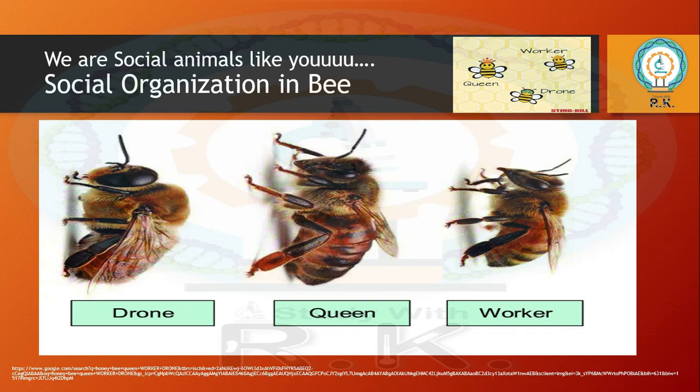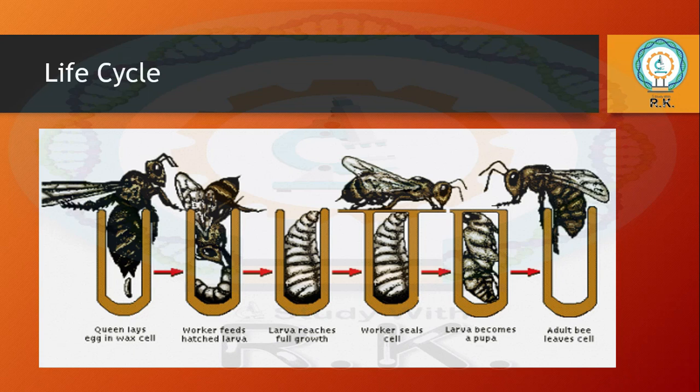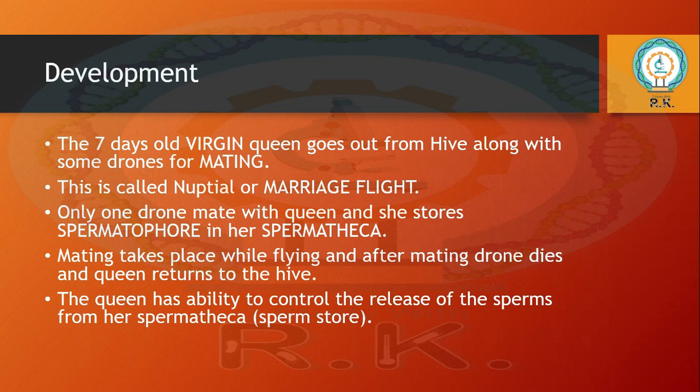Regarding the life cycle: the queen lays eggs in wax cells, workers feed the hatched larvae, the larvae reach full growth, workers seal the cell, larvae become pupae, and ultimately the adult bee leaves the cell. The seven-day-old virgin queen goes out from the hive along with some drones for mating.